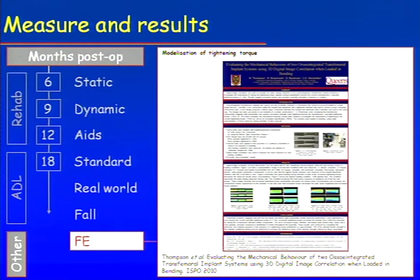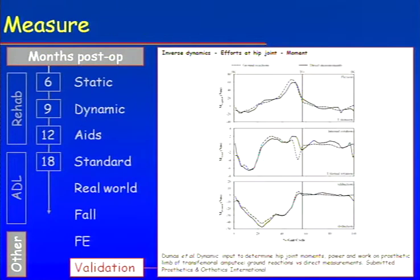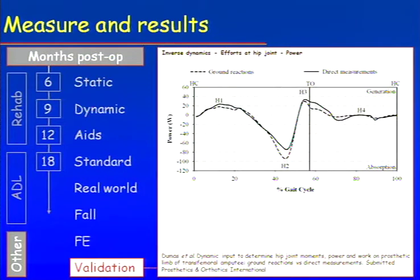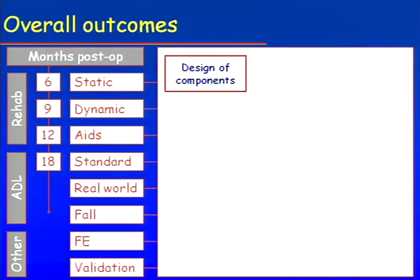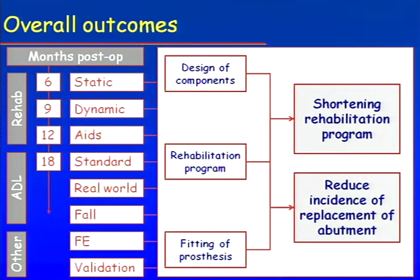Another analysis we can do is look at the correlation between the load and the tightening torque of the abutment. Another interesting factor is inverse dynamics. Typically when you want to measure load, you use a set of equations called inverse dynamics — using video data and force plate data to calculate forces applied at the ankle, knee, and hip. The inverse dynamics calculate the load while the transducer measures the load, so we can compare the two and validate gait lab measurements at the hip joint level. Altogether, what we are trying to do is improve the design of prosthetic components, improve the rehabilitation program and prosthesis fitting — and hopefully those combined will shorten the rehabilitation program and reduce the incidence of abutment replacement.